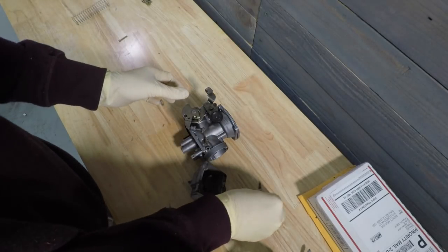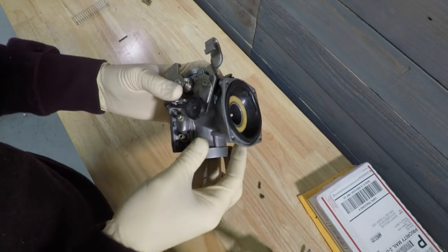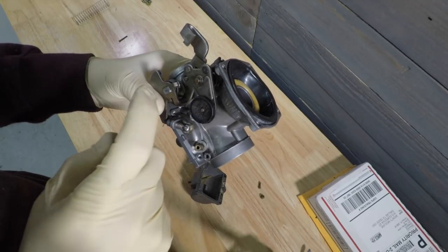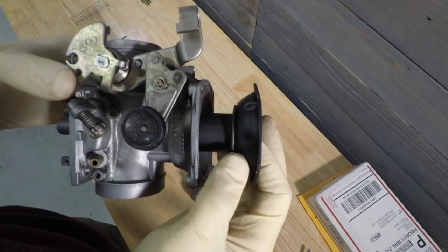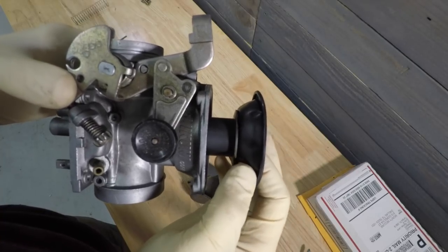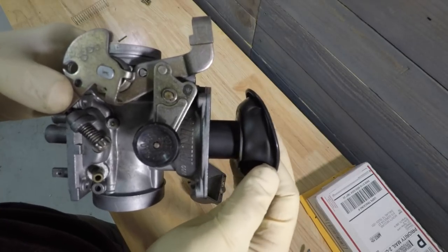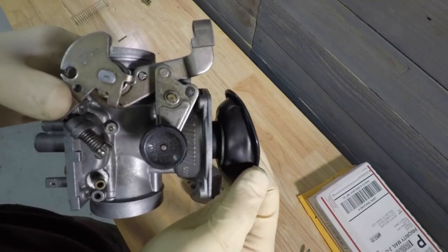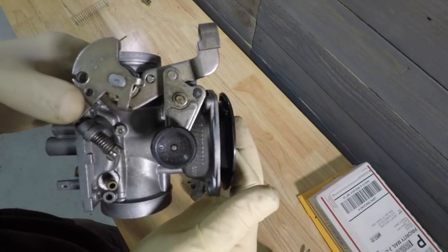The needle jet is where a majority of the magic happens. The needle is directly connected to the throttle. So as you turn the throttle, the throttle is attached to the needle and the needle moves up and down through the needle jet, allowing more or less fuel to pass into the carburetor.